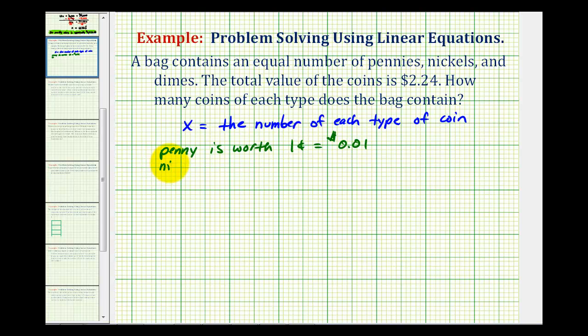A nickel is worth five cents, or 0.05 dollars. And then lastly, a dime is worth ten cents, or 0.10 dollars.